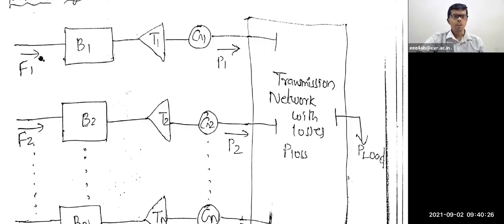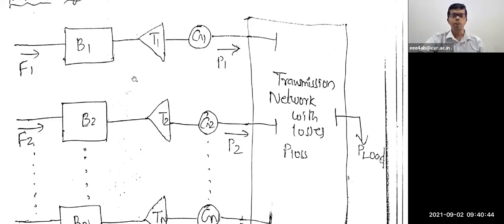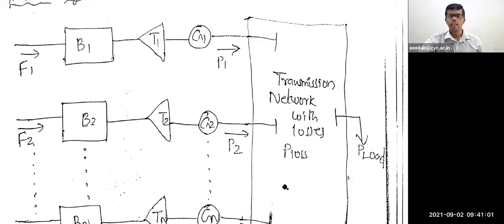So the fuel cost function of the first generating unit is F1. The boiler is B1, where an enormous amount of heat is generated and superheated steam is produced. It runs turbine T1, which is coupled with a generator connected to a common bus. Here you have to note the transmission network losses — even in power systems, network losses might be there.